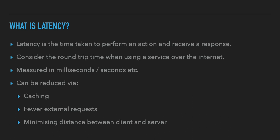Latency can be reduced via caching, fewer external requests — so if your service has to make a call to an external API, we can make fewer of those requests where possible — or by minimizing the distance between client and server. For example, it's going to take a lot longer for a packet to go from the United Kingdom to Asia than from the United Kingdom to the Netherlands.